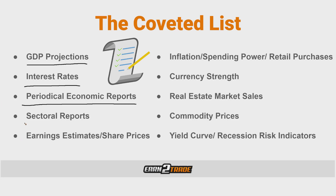Next we have sectoral reports. Based on the asset you are trading, different data sets have more influence in different sectors and countries. For example, if we're interested in trading corn futures — the US is by far the world's largest producer and exporter of corn — we should keep track of key reports like the USDA report, the Planting Intentions Report, and the Grain Stocks Report, all of which can give insight into what to expect going forward.